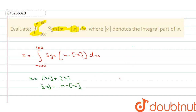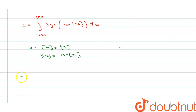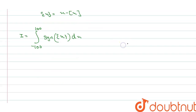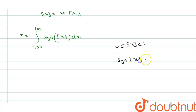So from here we can say that I equals the integral from minus 100 to 100 of signum of (fractional part of x) dx. We know that the fractional part of x lies between 0 and 1, so signum of (fractional part of x) is basically equal to 1.